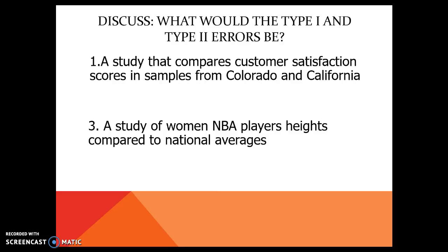Think about this one — press pause and think about what would be the type 1 and type 2 error. In this case, we are looking at NBA players compared to all other women in the US. If I reject the null hypothesis and say that women NBA players are taller than women on average, then I might have made a type 1 error. If on the other hand I do not find a difference between NBA players and everyone else — which would be kind of weird — then I might have made a type 2 error.